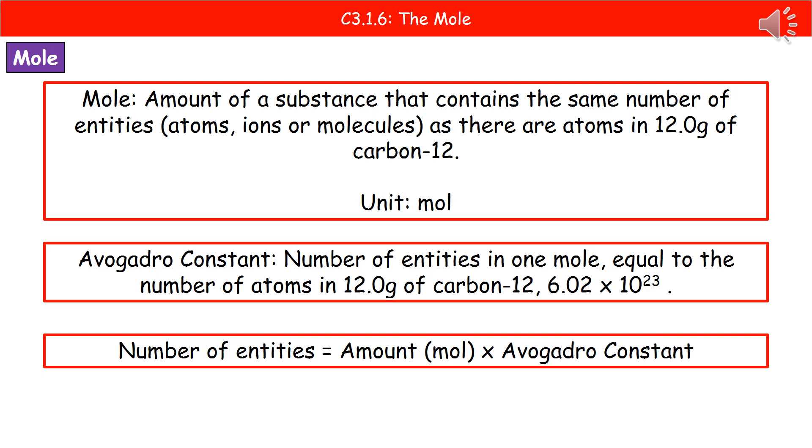The next term we need to understand is Avogadro constant. Now quite simply this is our number which is telling us the number of entities in one mole, that is the same as the number of atoms in 12 grams of carbon-12. So that's 6.02 times 10 to the power 23, that is the Avogadro constant. That's the number we would use.